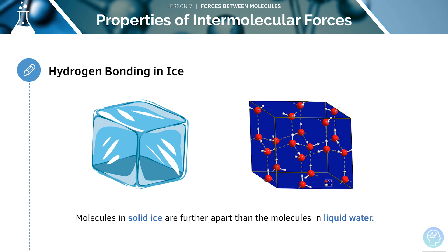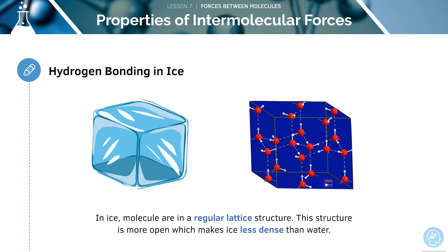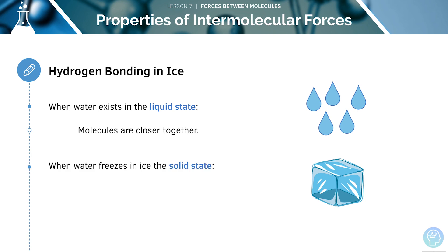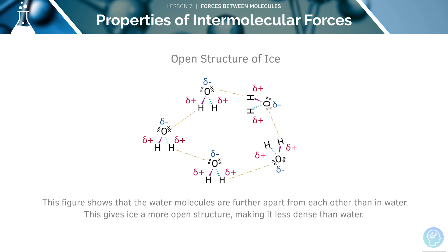Now let's look at hydrogen bonding in ice. When water exists in the liquid state, the molecules are closer together. However, when water freezes into ice, which is in the solid state, more hydrogen bonds are formed. The molecules in ice are further apart than in liquid water because they are arranged in a regular lattice structure. This makes ice less dense than water, giving it a more open structure.